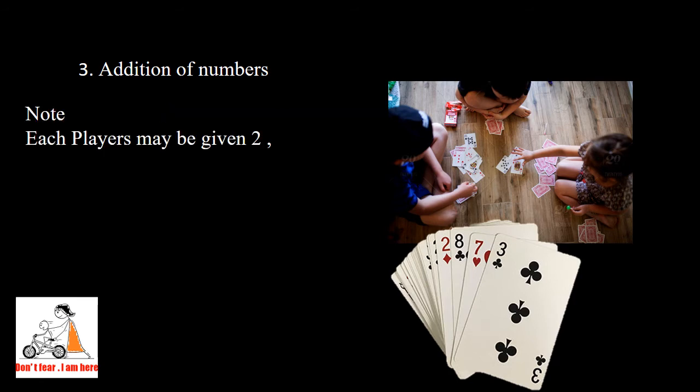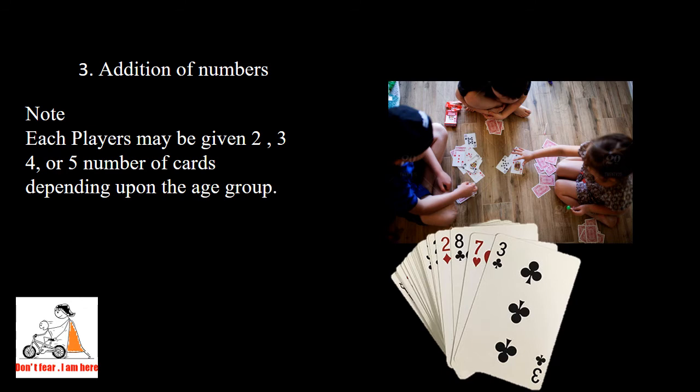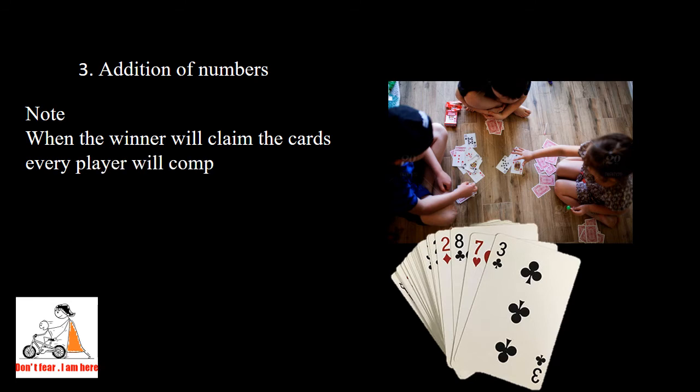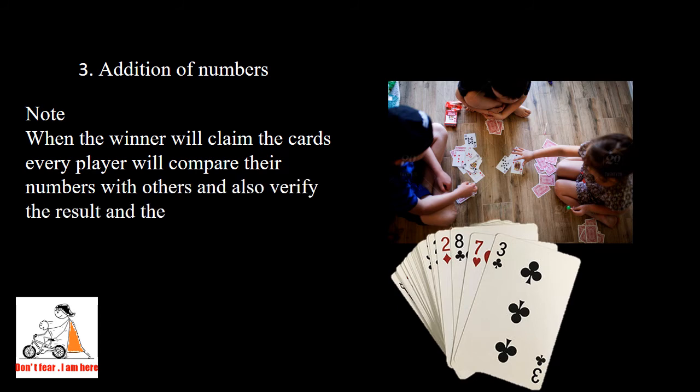Please note: each player may be given two, three, four, or even five number of cards depending upon the age group. They can add five numbers. When the winner claims the cards, every player will compare their own numbers with others and will verify whether the person is announcing correct or not. They will learn addition very perfectly.